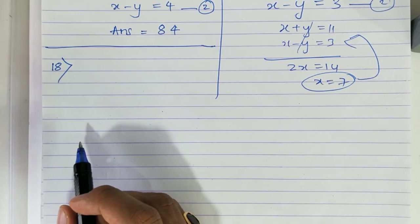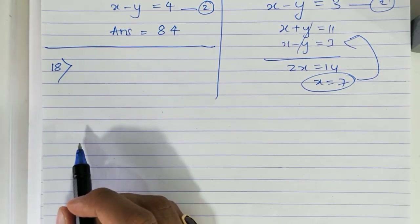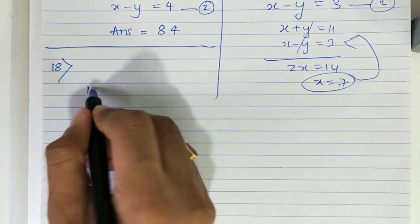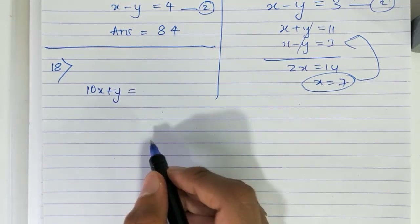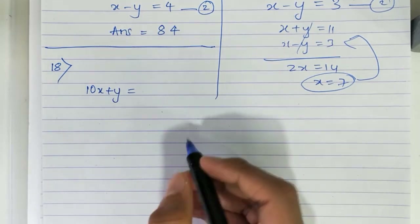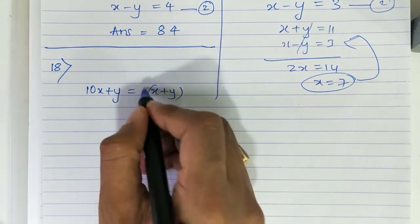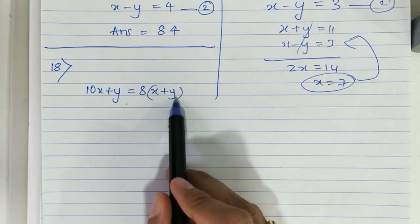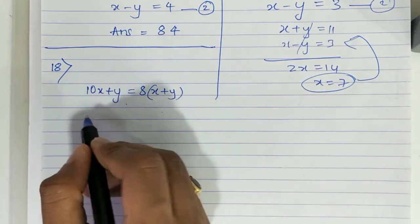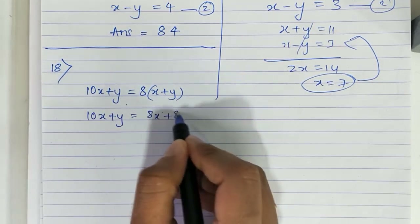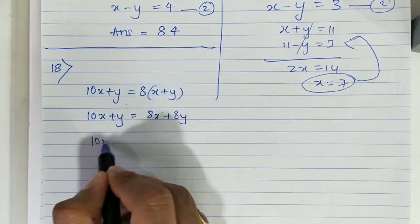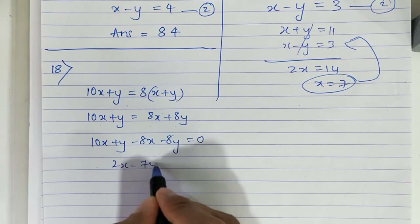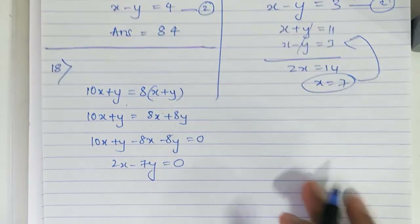18th sum: 'A two-digit number is obtained by multiplying the sum of the digits by 8.' So 10x+y equals 8(x+y), which gives 10x+y equals 8x+8y. Shifting: 10x minus 8x is 2x, y minus 8y is minus 7y, equals 0. This is the first equation.